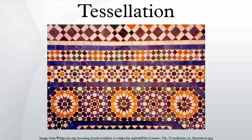Tessellations in three or more dimensions are called honeycombs. In three dimensions there is just one regular honeycomb, which has eight cubes at each polyhedron vertex. Similarly, in three dimensions there is just one quasi-regular honeycomb, which has eight tetrahedra and six octahedra at each polyhedron vertex. However, there are many possible semi-regular honeycombs in three dimensions.